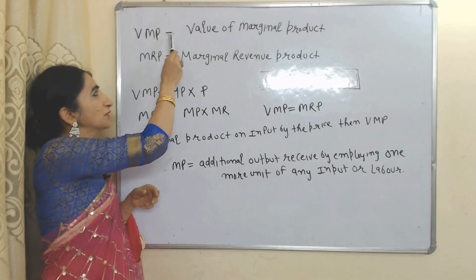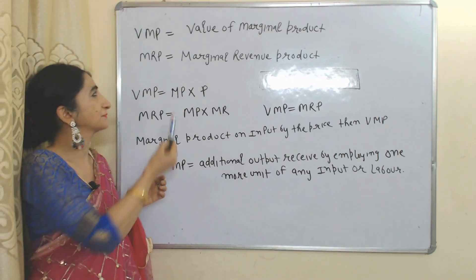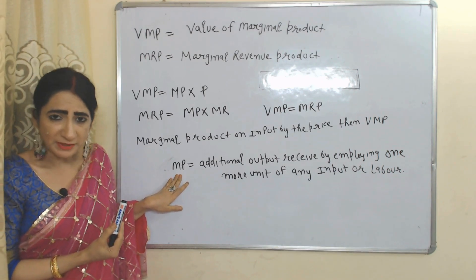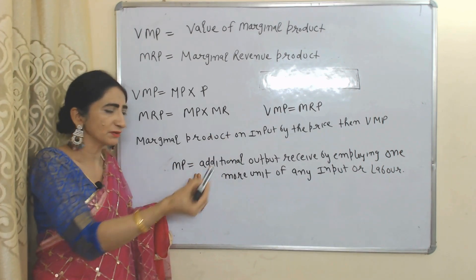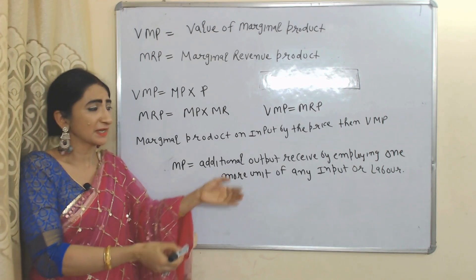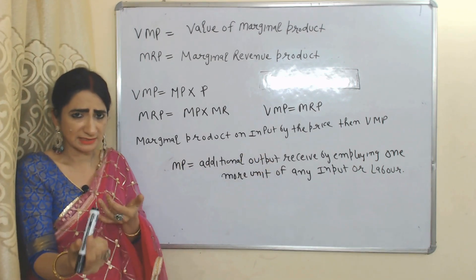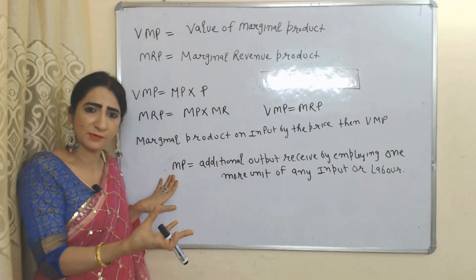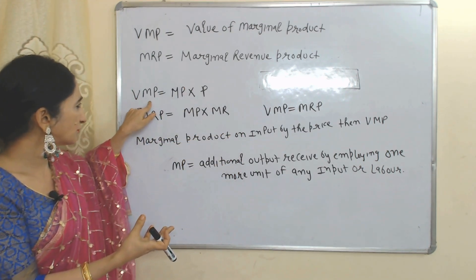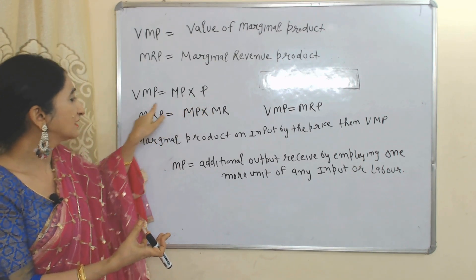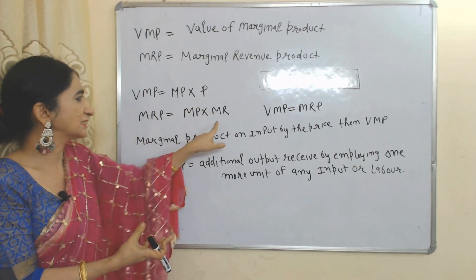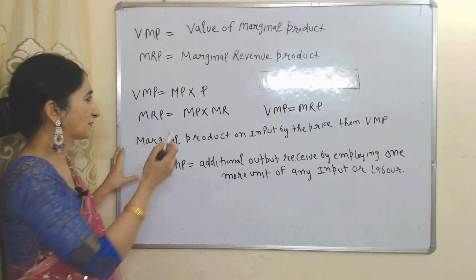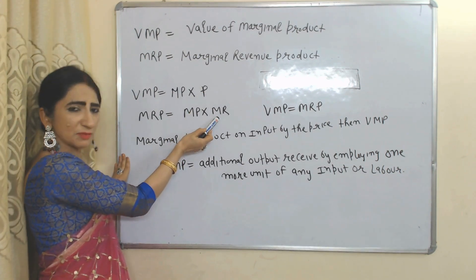Before knowing about the factor market, we should learn about some terms: VMP and MRP. VMP represents Value of Marginal Product; MRP represents Marginal Revenue Product. Marginal product means additional output received by employing one more unit of any input or labor. We can calculate VMP by multiplying price with MP, and we can calculate MRP by multiplying marginal revenue with MP, where MP means marginal product.